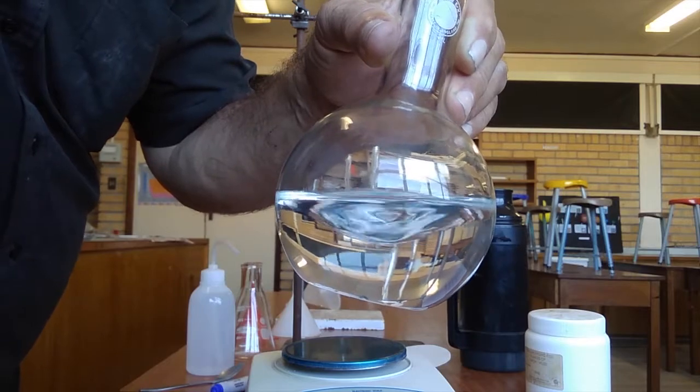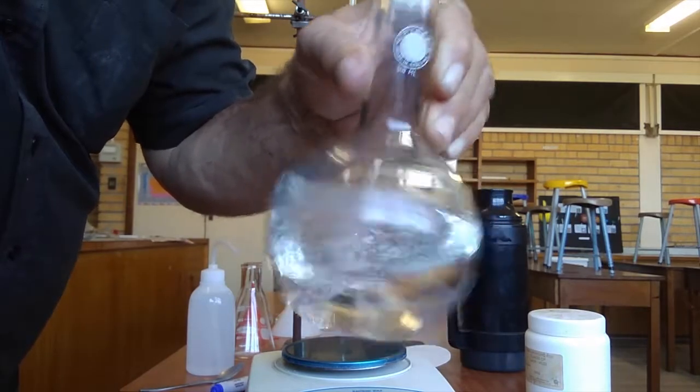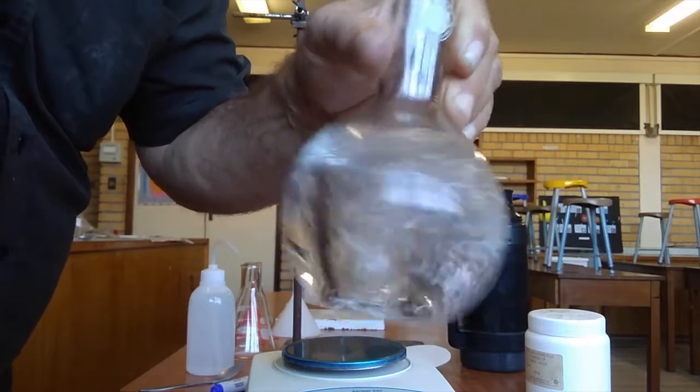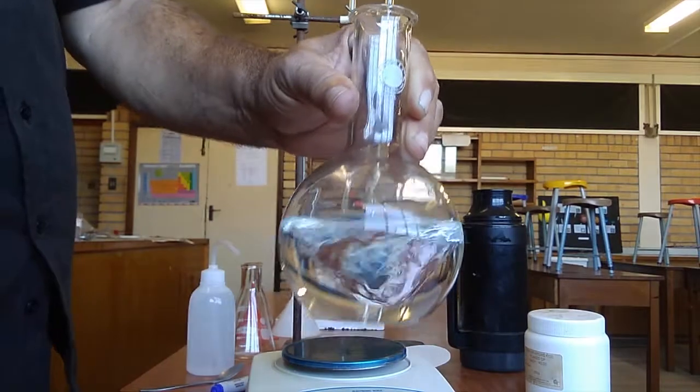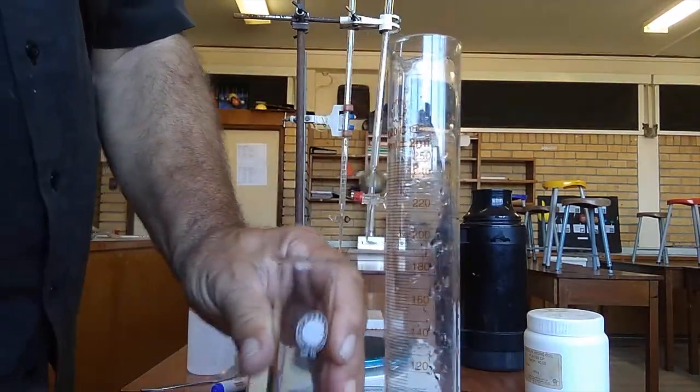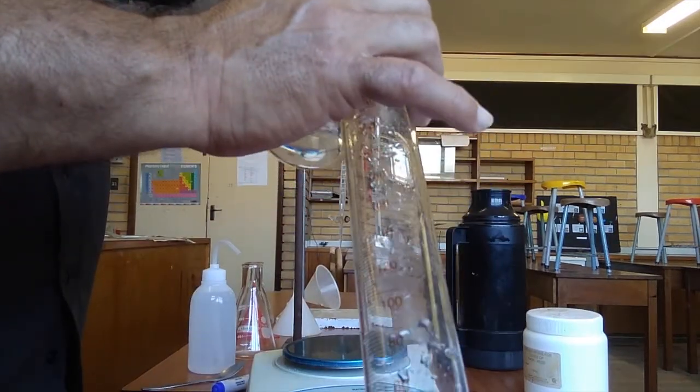When that's completely dissolved, we're going to take a measuring cylinder again. Because we don't have one with a nice thin stem, we need to pour it back in here.